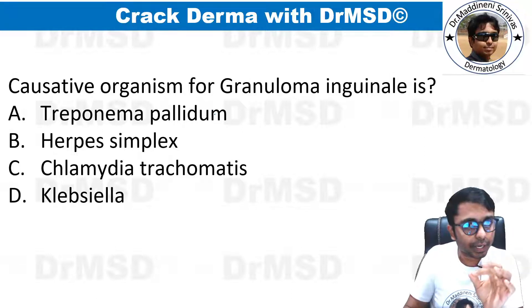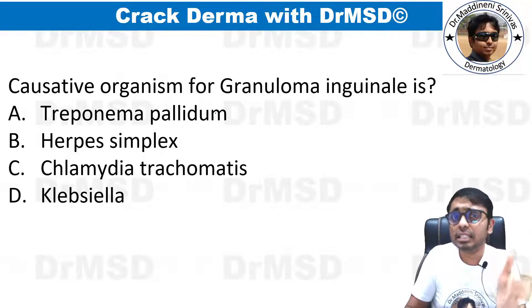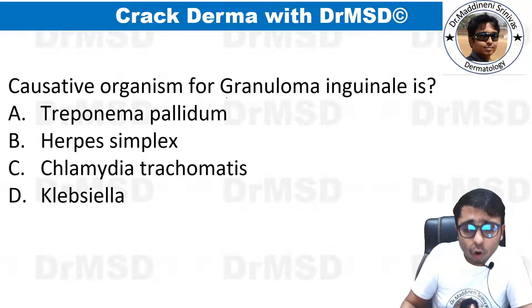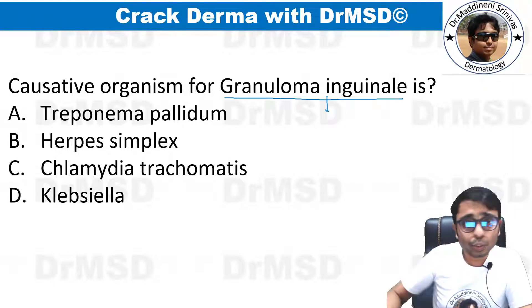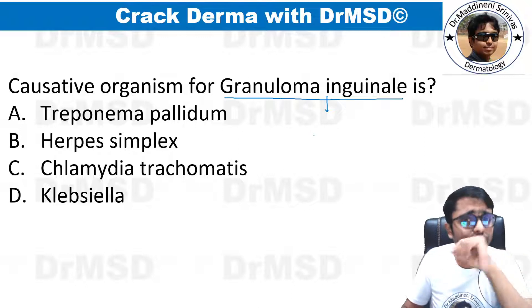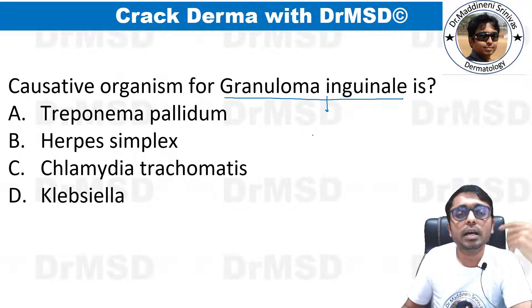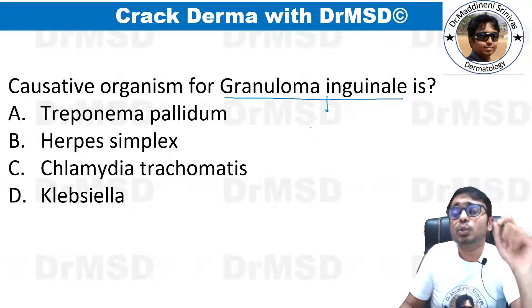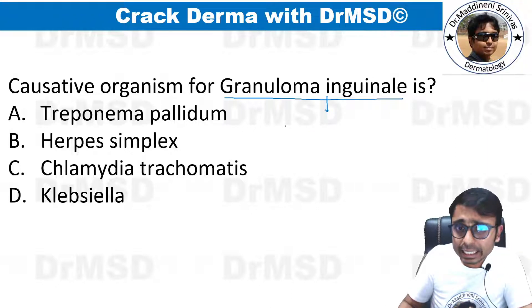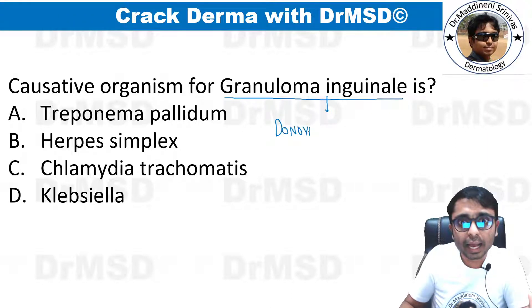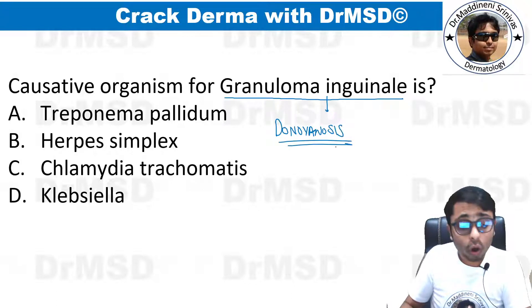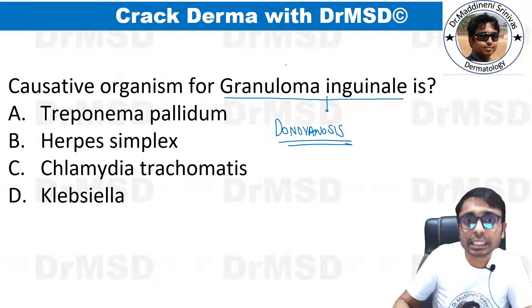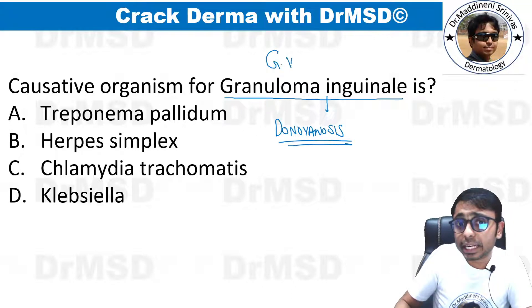The causative organism for granuloma inguinale — this is very important and has been discussed many times. Granuloma inguinale is also known as donovanosis, or granuloma venerium.